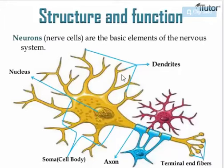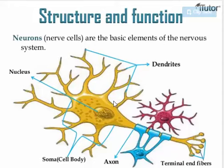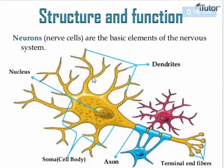The dendrites are the points that receive information from around the neuron. They are very tiny branches arising from the neuron that allow it to collect information. Whatever information is collected from the dendrites is processed within the cell body, and then the response is transmitted in the form of impulses through the axon. So dendrites collect information into the neuron, and the axon takes information away from the neuron.